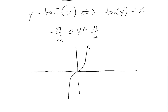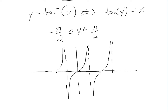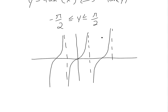The graph of tan x has asymptotes and repeats forever, continuing in both directions. So you're going to have something like this — and this is y equals tan x.